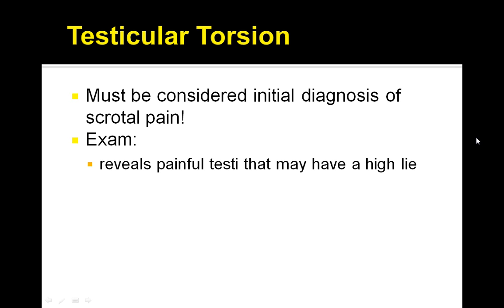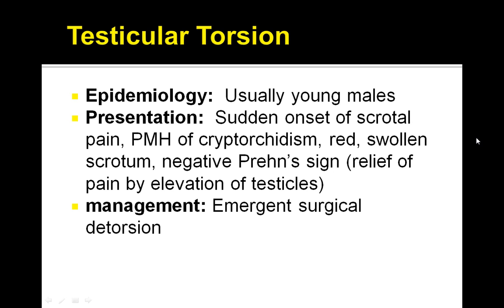Your exam reveals a painful testis that may have a high lie. It usually occurs in young males, and the presentation is a sudden onset of scrotal pain, a past medical history of possible cryptorchidism, red swollen scrotum, and a negative Prehn's sign. This is a sign where pain is relieved by the elevation of the testicles, and in testicular torsion this is a negative sign, which should help clue your diagnosis.